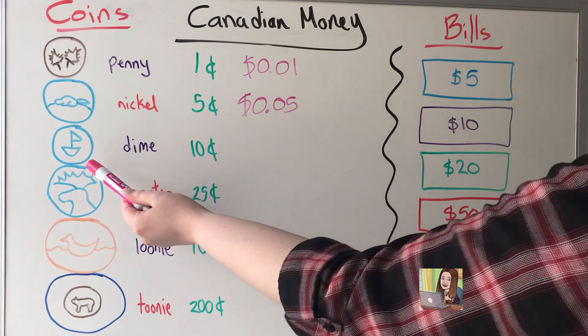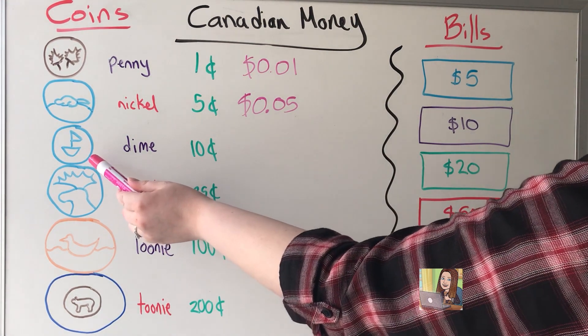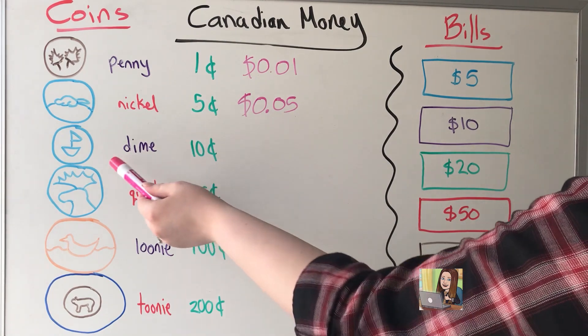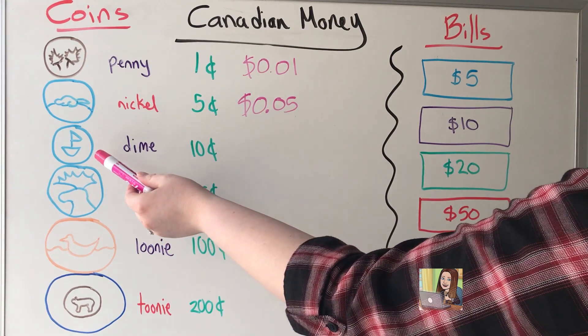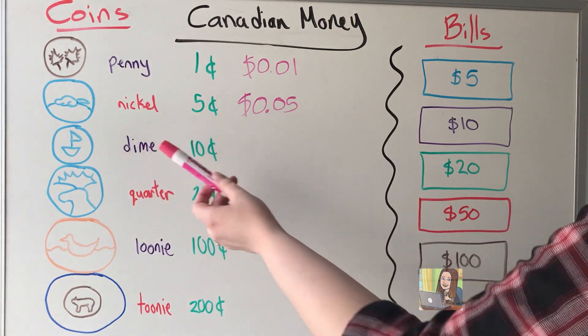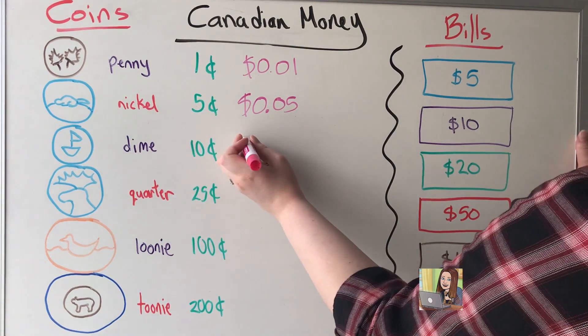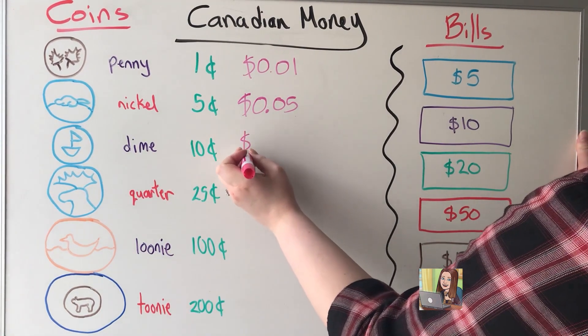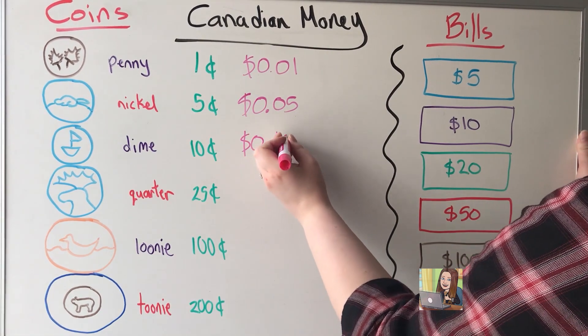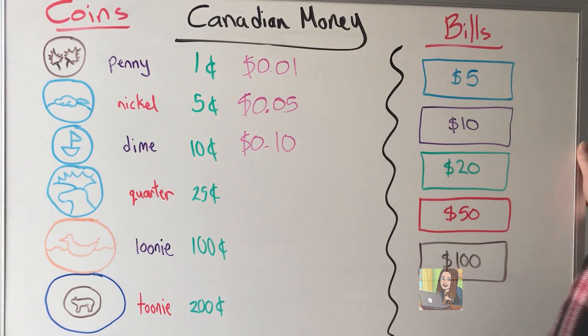The dime is worth 10 cents. It has the Bluenose — the boat on it — and written in dollars, $0.10.